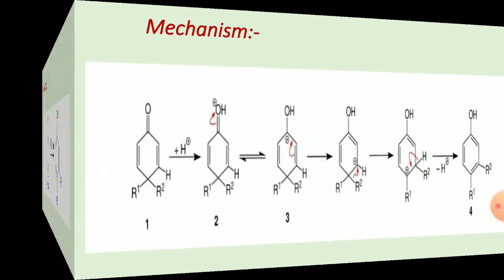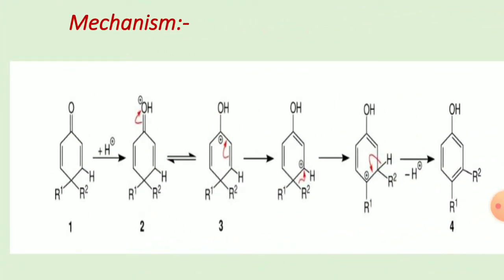The mechanism: firstly, under H⁺ conditions, protonation takes place. The lone pair of oxygen abstracts the H⁺. In the next step, oxygen carries a positive charge, then electrons attack towards the oxygen, creating a positive charge on carbon — formation of the carbocation intermediate.